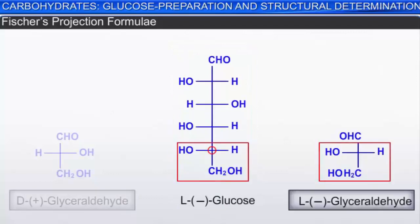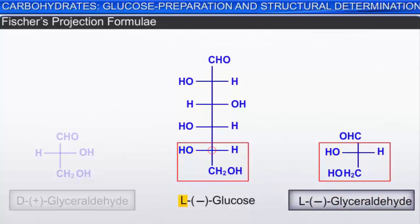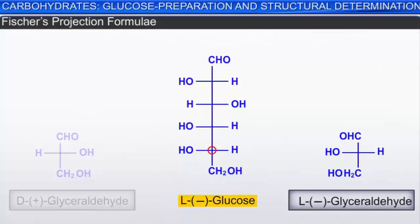If the configuration around the lowest asymmetric carbon matches the arrangement of the minus stereoisomer of glyceraldehyde — that is, if the OH group is on the left-hand side — then the molecule is said to have L-configuration. The molecule shown is L-glucose, which is levorotatory glucose with L-configuration.